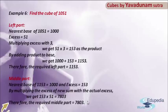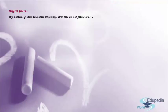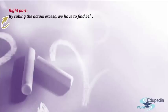After completing the middle part, let us move to the right part. Here in the right part, the first and last step is to find the cube of the actual excess. The actual excess is 51, so we have to find the cube of 51. Now, 51 is a two-digit number, so finding its cube is somewhat difficult. To get past that difficulty, I am going to apply Anurupena Sutra in order to find the cube of 51.